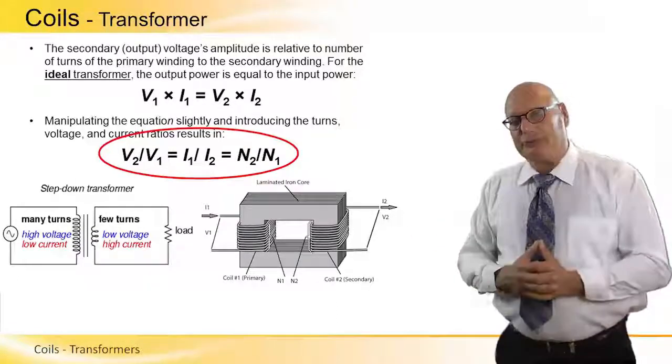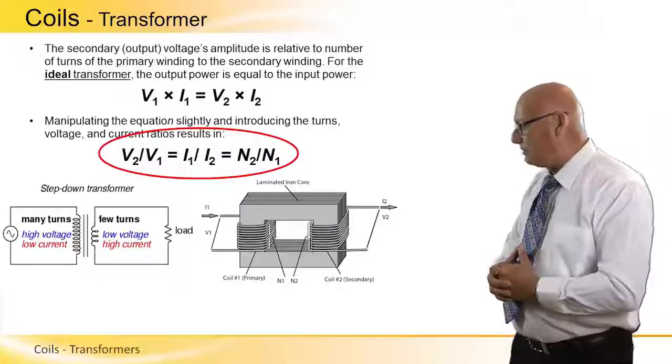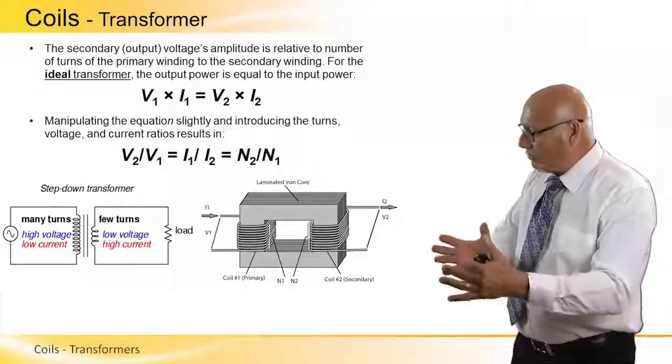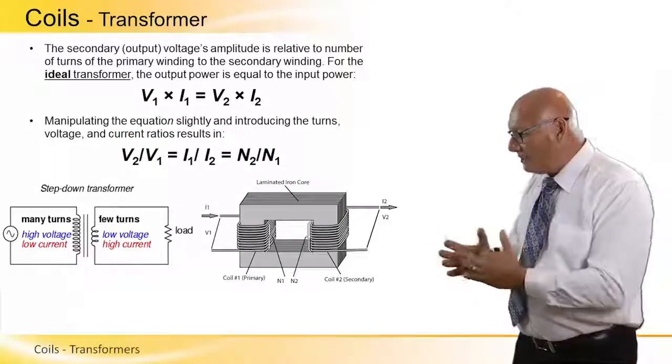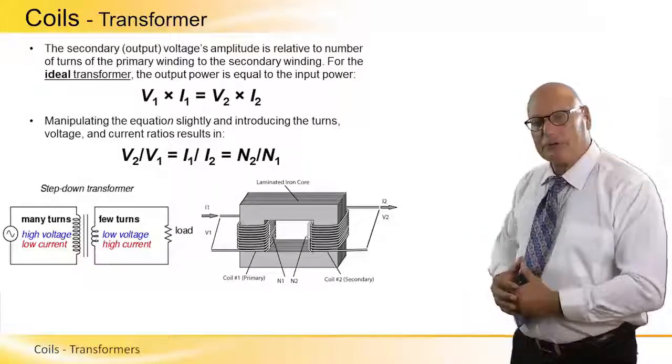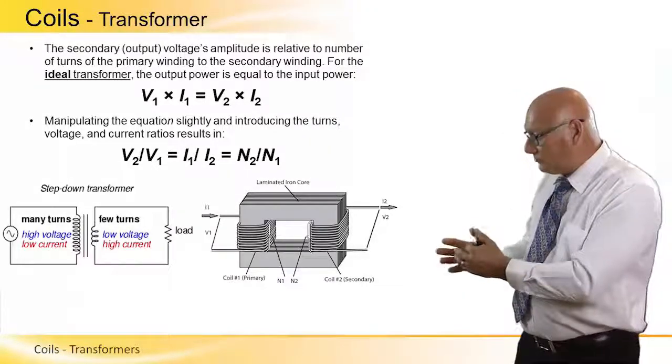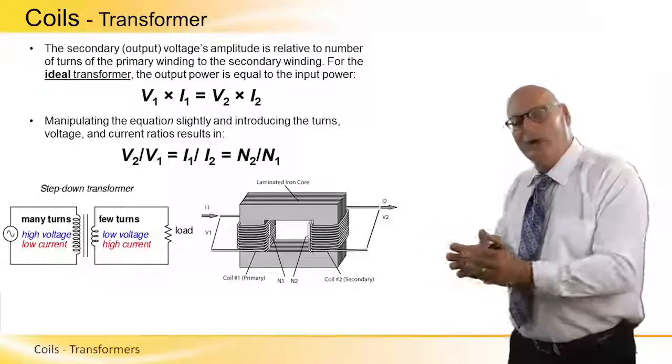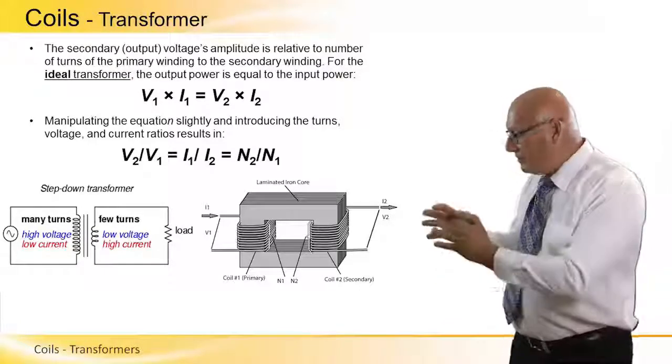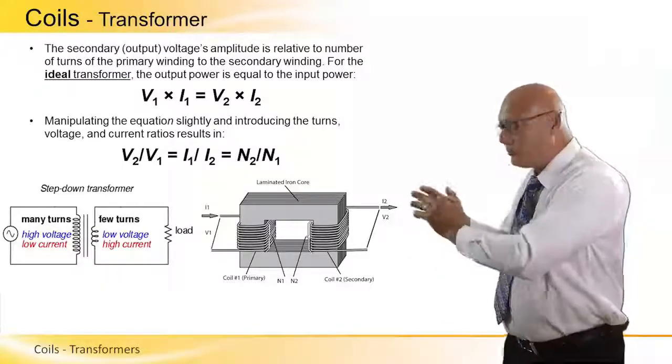Let's look at the picture on the left to summarize what we just did. The primary, which is on the left, many turns, high voltage, low current. The secondary, what's on the right, few turns, low voltage, high currents, following the formula up there.